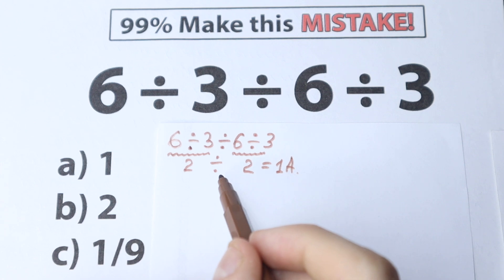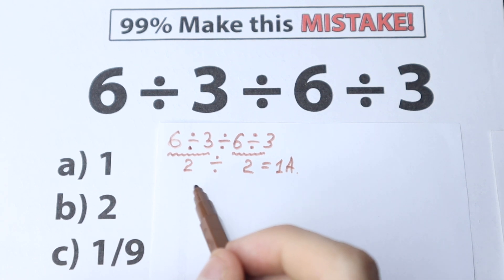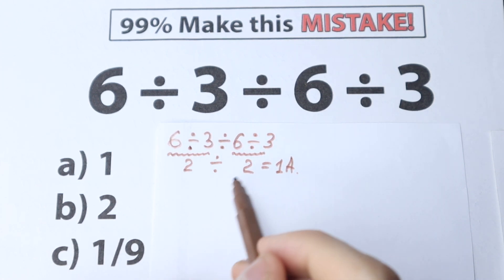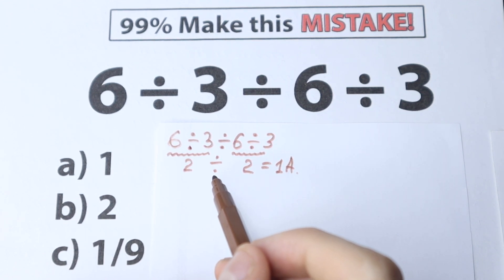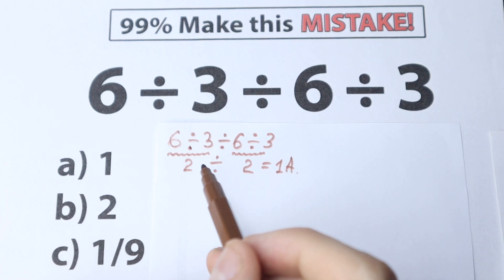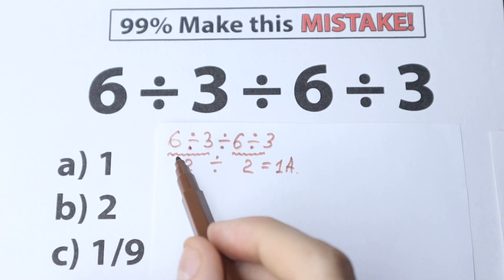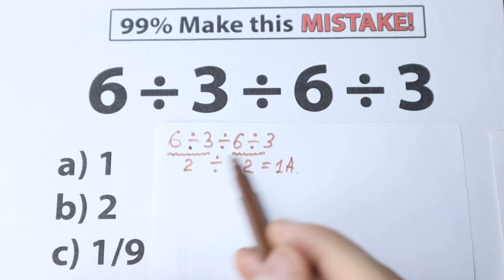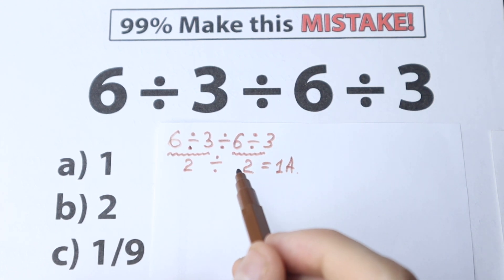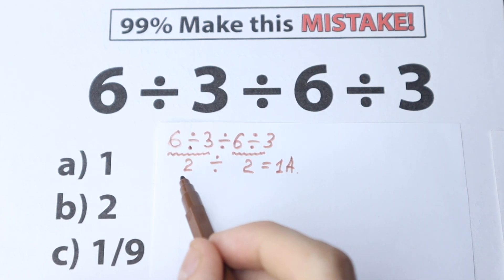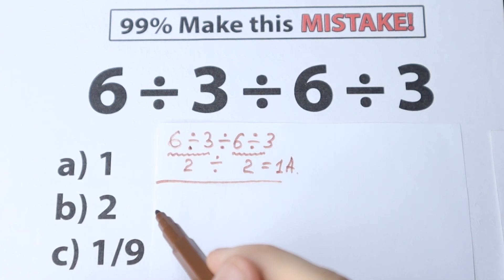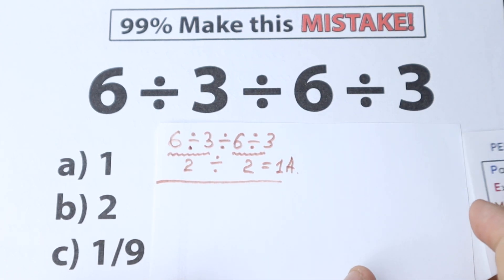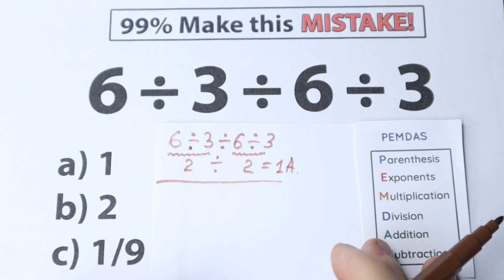A lot of students solve this question that way. I don't want to say right now whether that is correct or incorrect — I want you to understand that in math we need to know about order of operations, and how to solve this correctly step by step. Because right here we jumped from left to right, but is that the correct approach? In math, it doesn't matter what question you have — you need to apply the order of operations. So let's look at the PEMDAS order of operations.